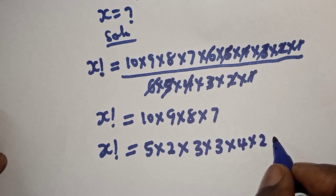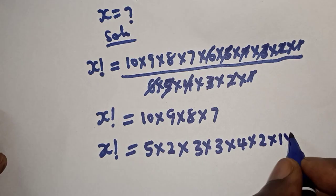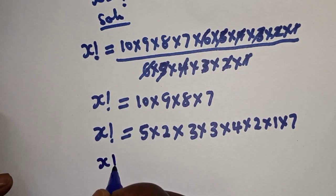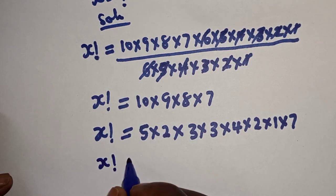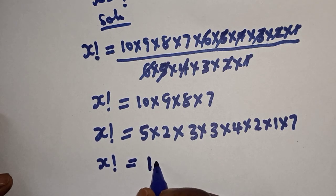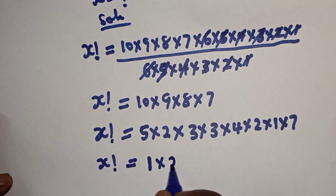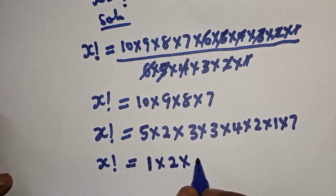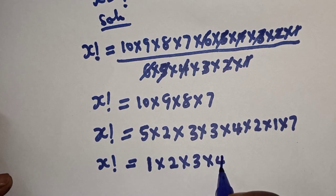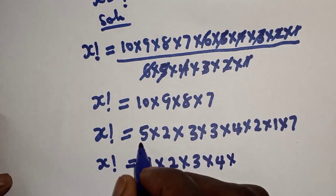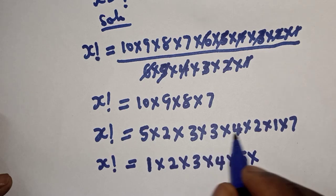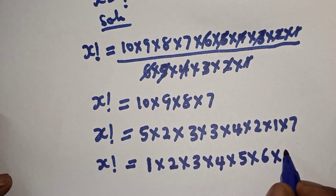Now x factorial is equal to 1 multiplied by 2 multiplied by 3 multiplied by 4 multiplied by 5 multiplied by 6 (which is 3 times 2) then multiplied by 7.